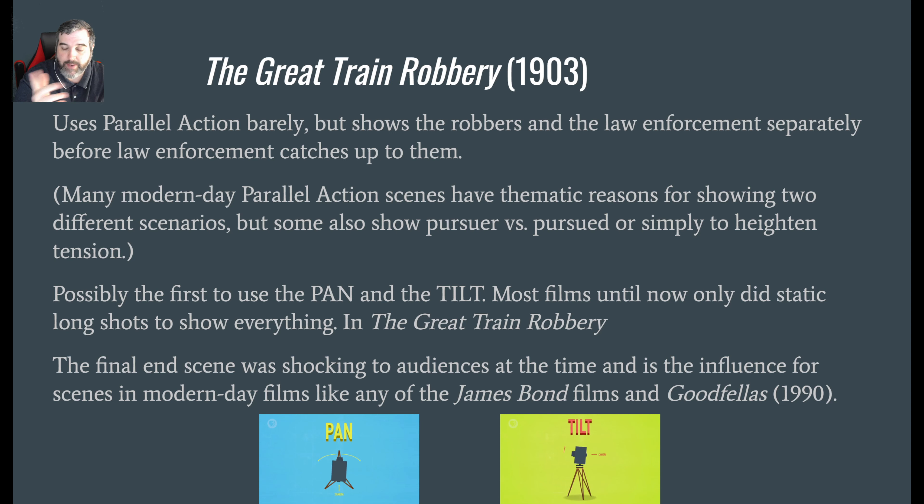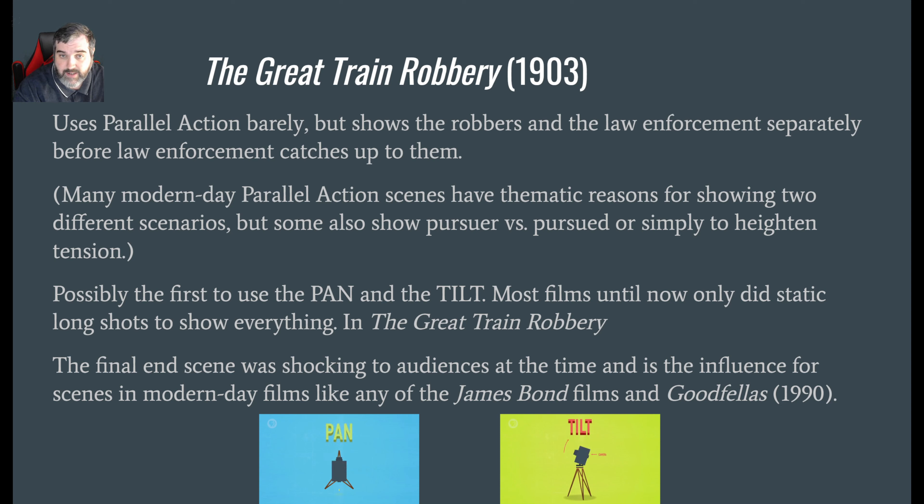If you watch the beginning of any James Bond movie, it starts with a gun barrel — you're looking down the barrel, you see the agent walking by, the gun barrel follows him, he turns and shoots, the red drops, and then they start the big opening musical number with the credits rolling. It's believed that the scene at the end of Great Train Robbery was part of the influence for that particular James Bond opening. Also, the very end of Goodfellas has a scene where one of the characters does the same thing — points at the screen and fires the gun over and over again — very similar to The Great Train Robbery.